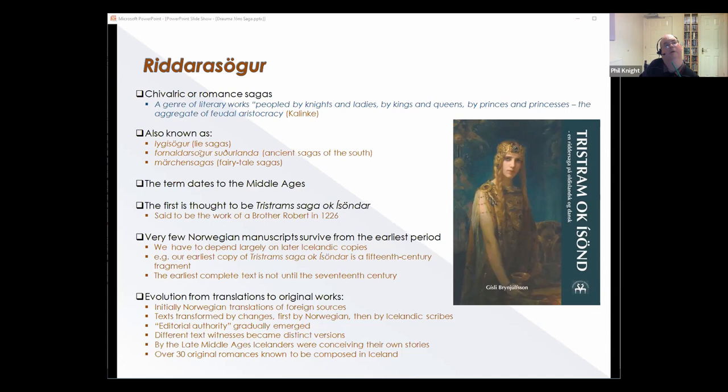The work generally thought to be the first riddarasaga, Tristrams saga ok Ísöndar, dates to the 13th century and has a colophon in the text claiming that the work was translated by a Brother Robert in 1226. But survivals of Norwegian manuscripts from that period are scarce, and we have to depend largely on later Icelandic copies which have quite often undergone many alterations during their transmission. The riddarasögur genre itself went through a number of stages of development. It started out basically with Norwegian translations of foreign sources, but then the manuscripts start to show a growing independence from these foreign works as the texts slowly transform by changes introduced first by Norwegian and then Icelandic scribes.